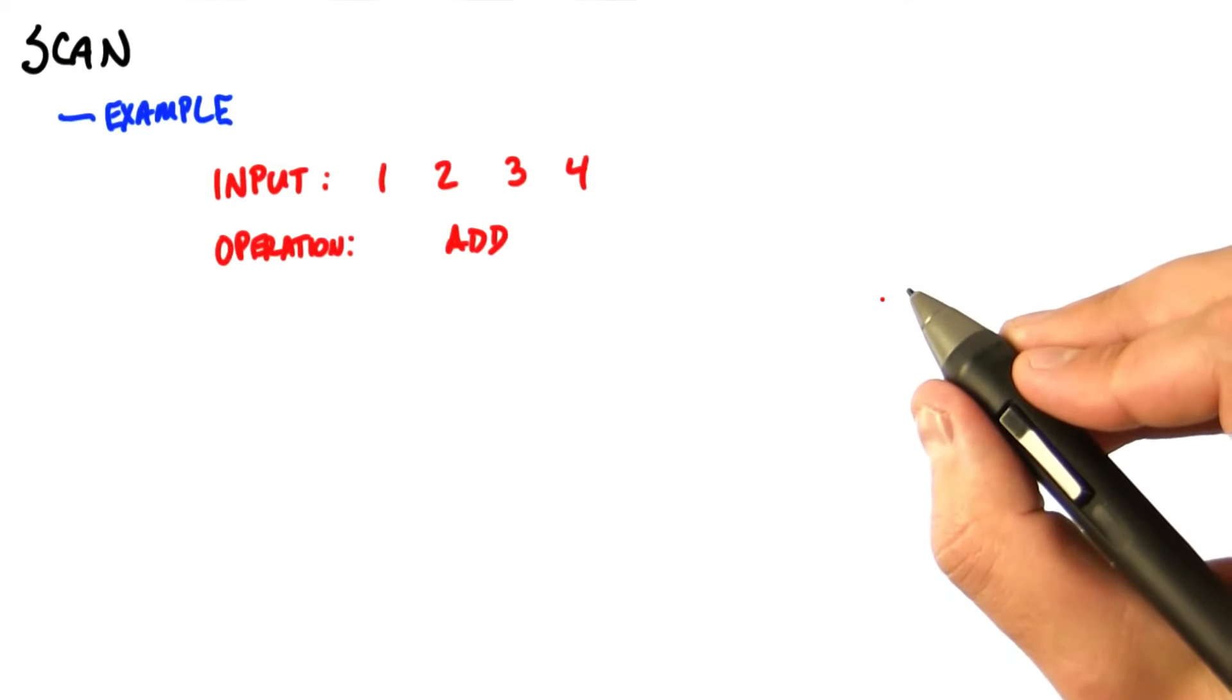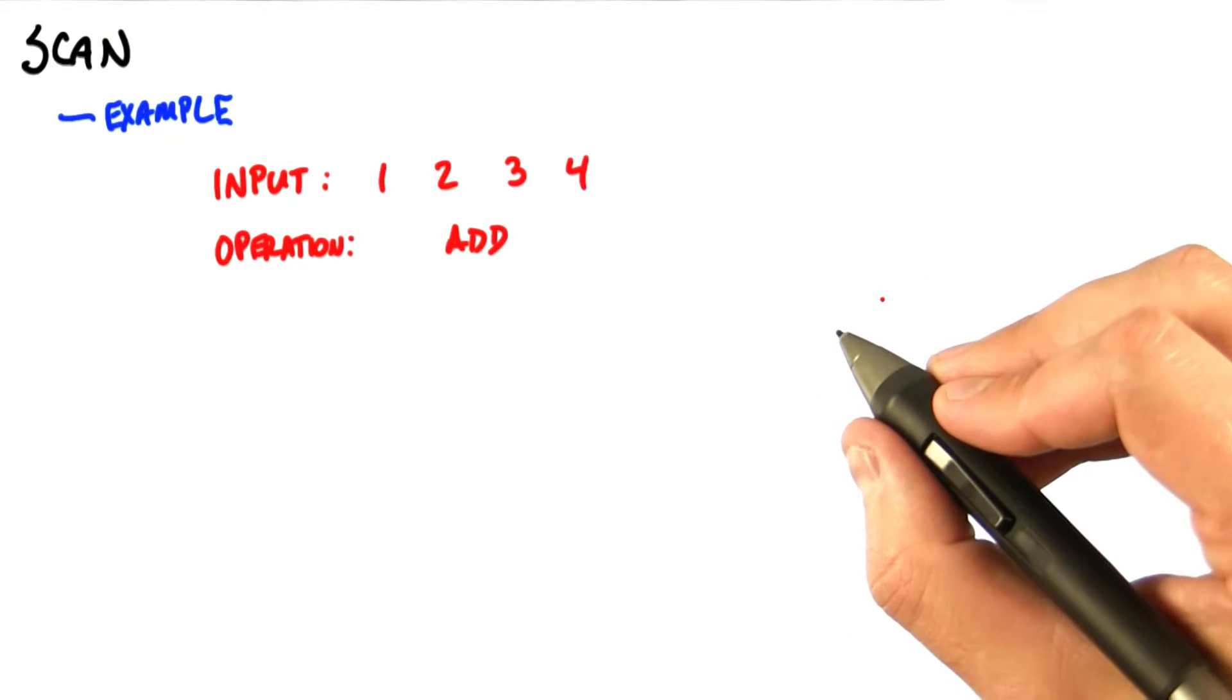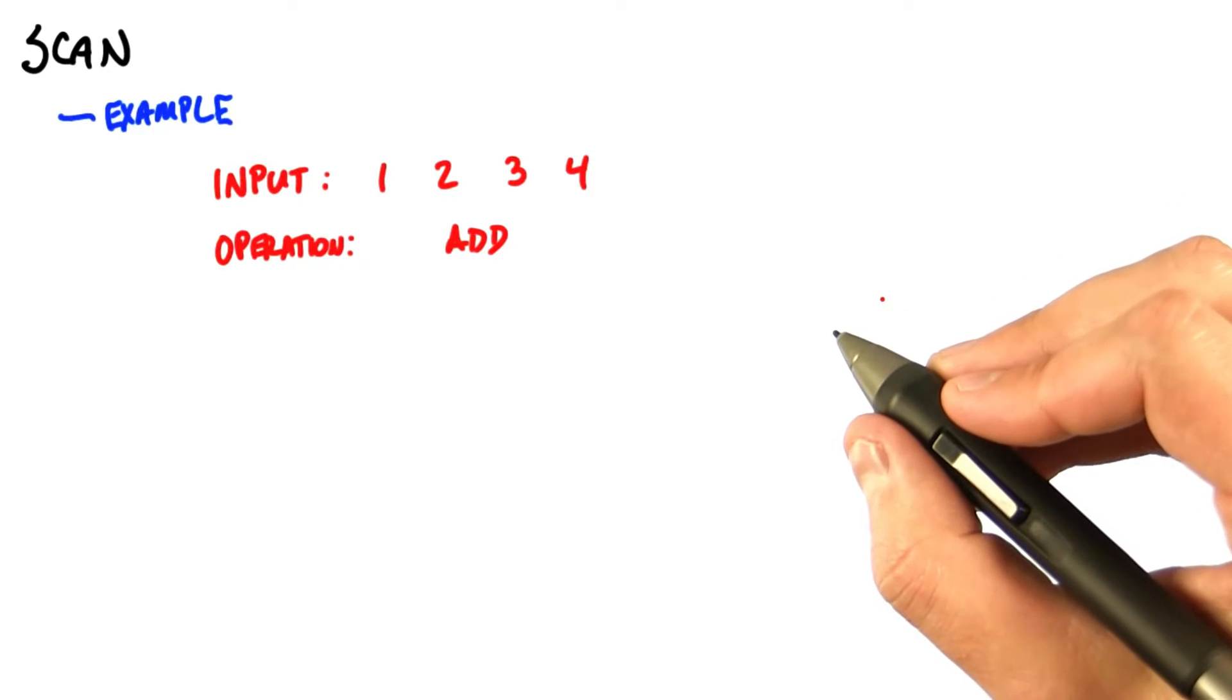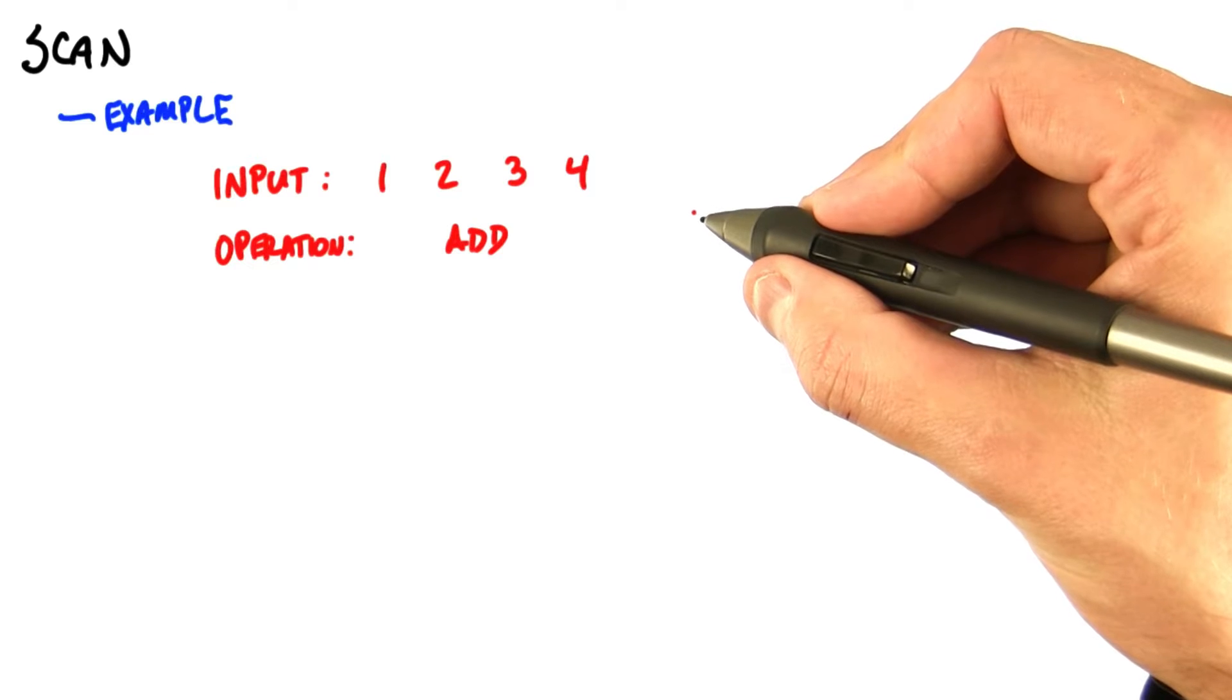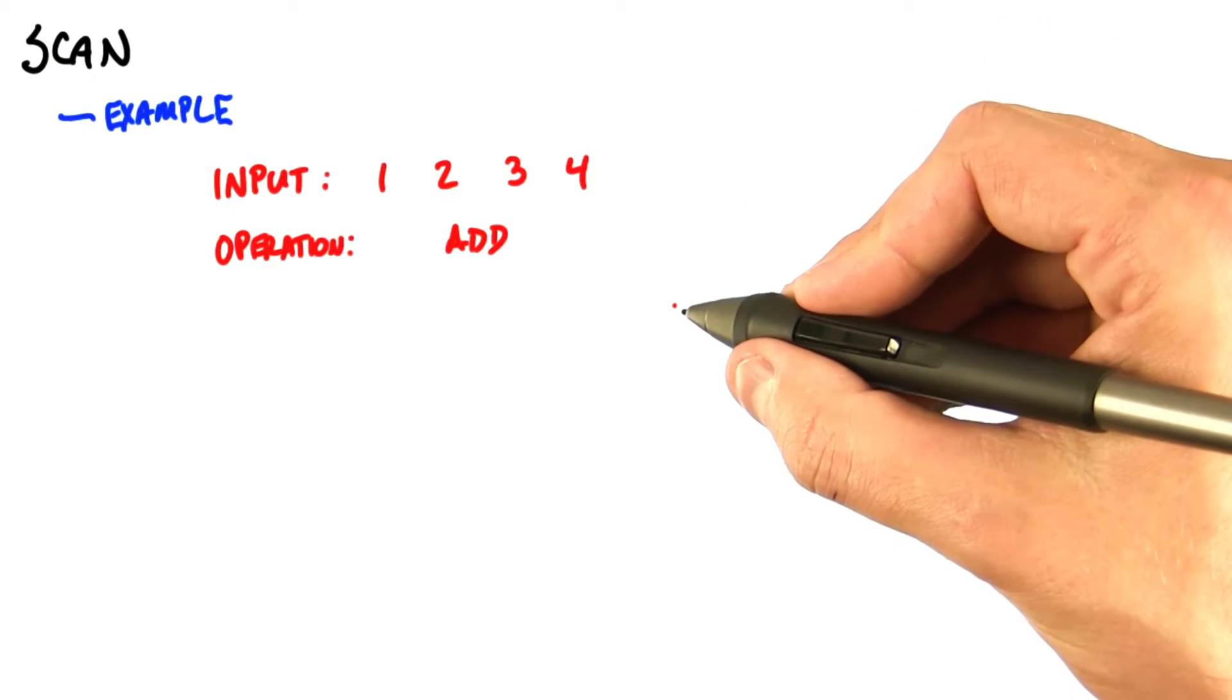We're going to introduce one of the most important parallel primitives: scan. Let me give you a very short example of a scan operation. The input to scan is a list of numbers, such as 1, 2, 3, 4, and an operation, such as add.